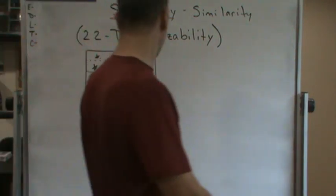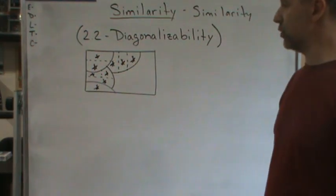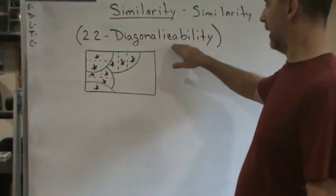Okay, so now we're going to start the next section, which is 2.2. We're going to talk about diagonalizability.